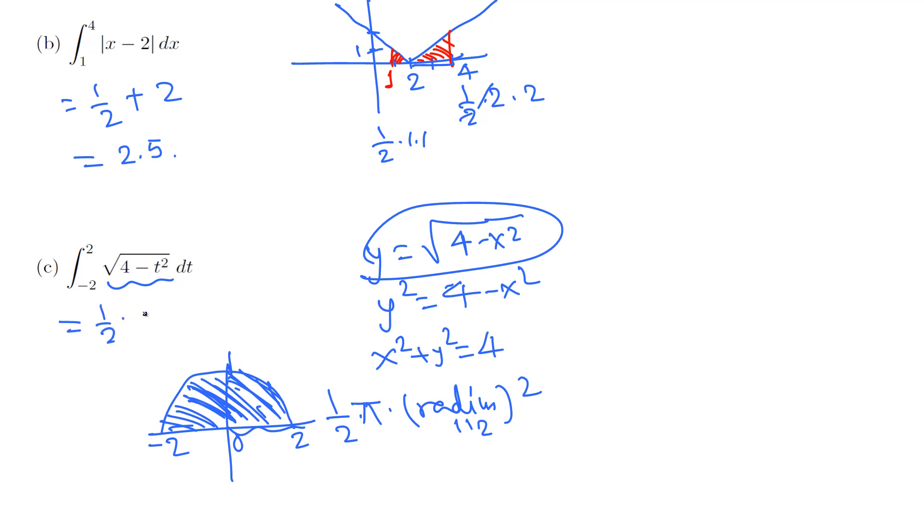This is one half times π r squared. R is 2 squared, which is 4. This 2 divides 4 twice, giving us 2π. So the answer is 2π.